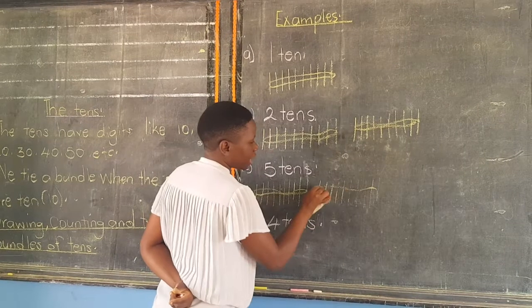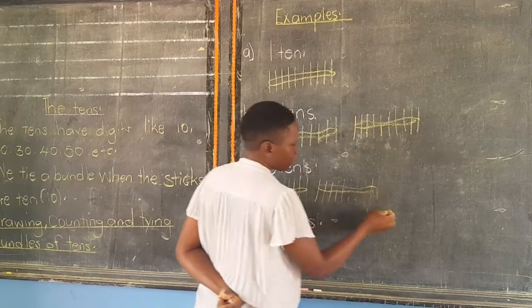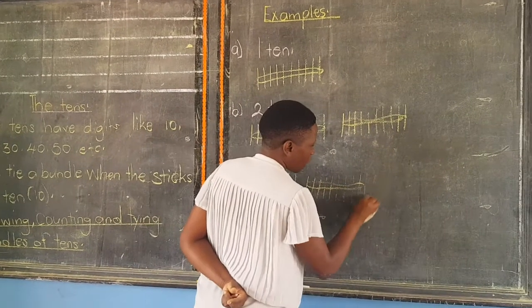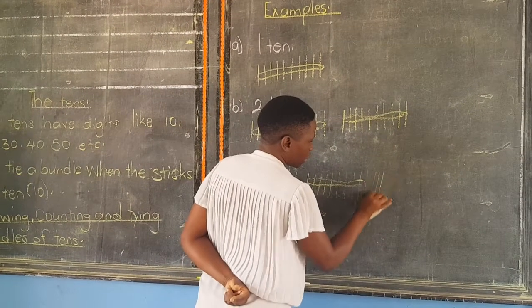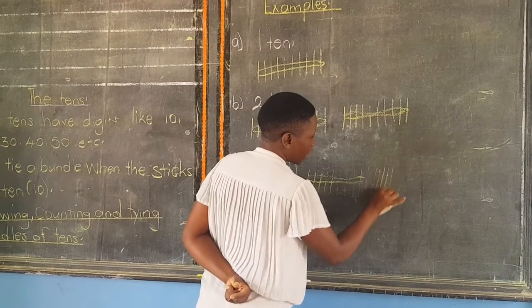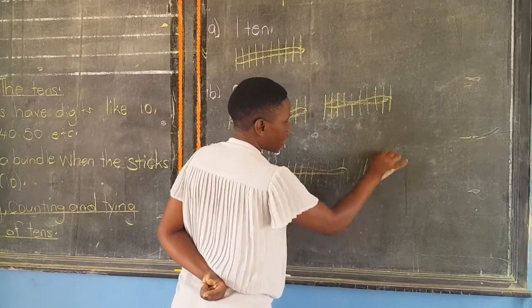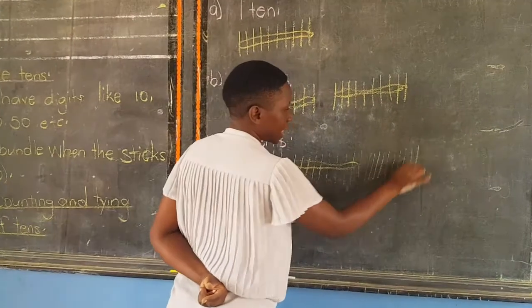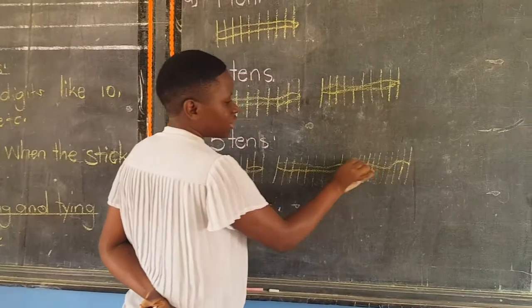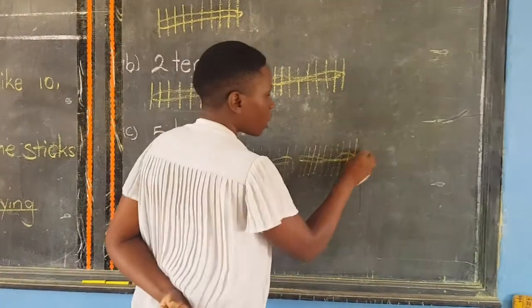One, two, three, four, five, six, seven, eight, nine, ten — that means two. One, two, three, four, five, six, seven, eight, nine, ten. This is bundle three. We are remaining with two.